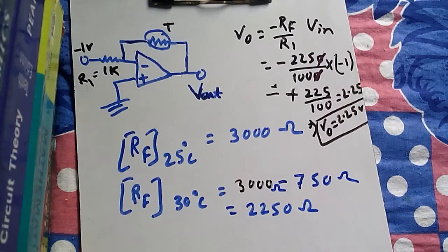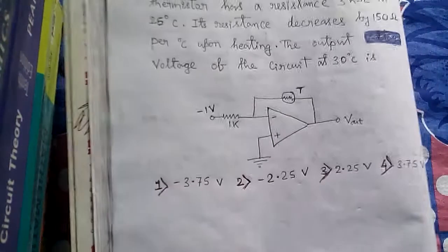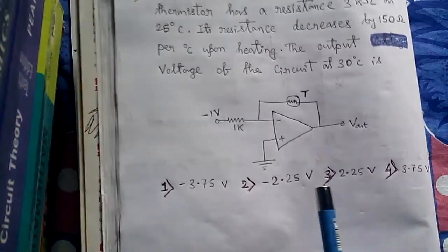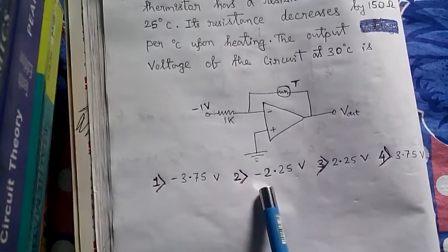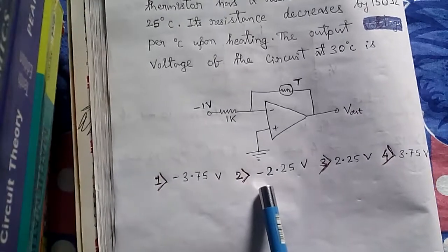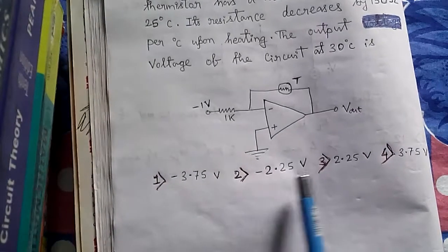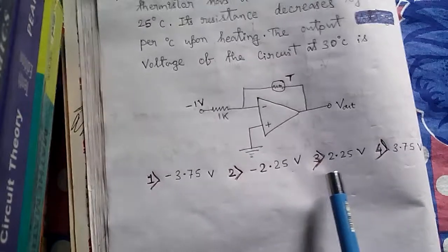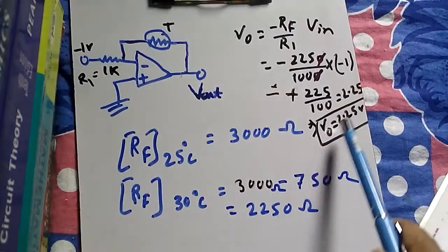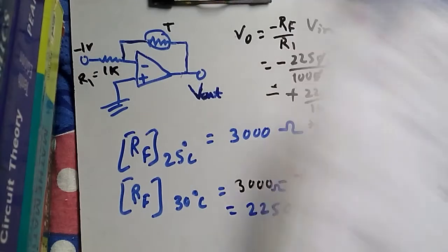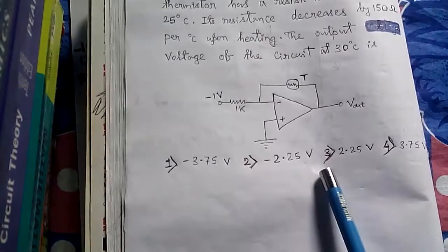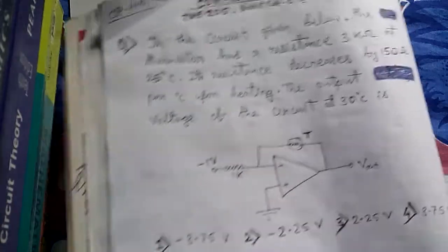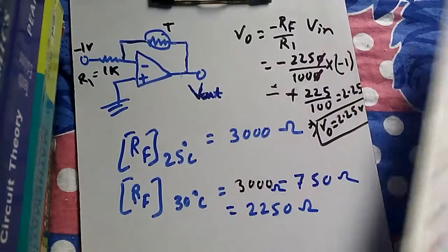In the problem, there are two similar answer options: minus 2.25 and plus 2.25. Since we have calculated plus 2.25 volts, the answer is option 3. Thank you.